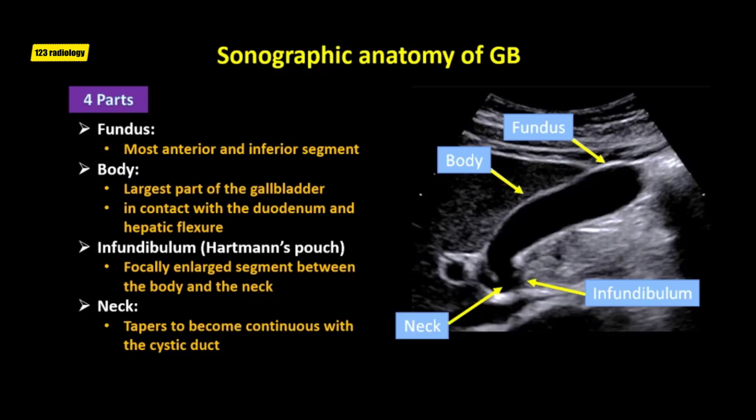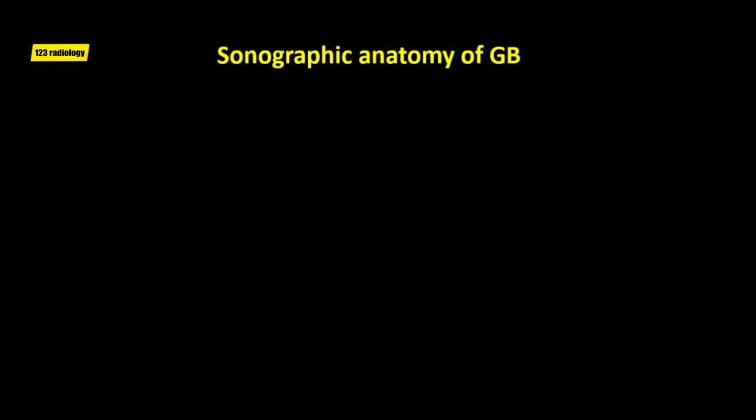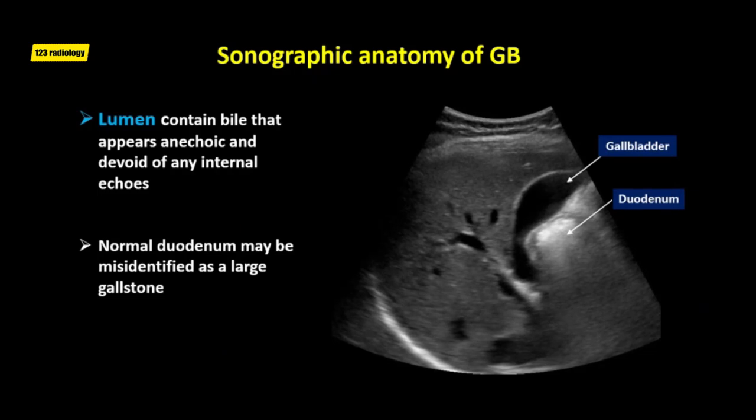The neck of the gallbladder lies between the body and the cystic duct and points toward the porta hepatis. The normal gallbladder lumen should contain bile and should not have any space-occupying lesions. Normal bile appears anechoic and devoid of any internal echoes. On ultrasound, a large echogenic reflector with posterior dirty shadowing abutting the gallbladder body and neck is actually bowel gas, which should not be confused for a stone or gas in the gallbladder.